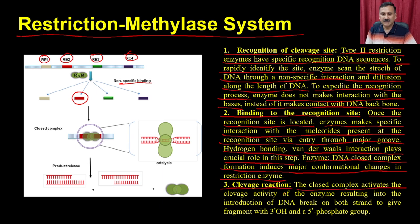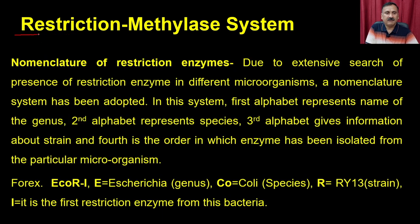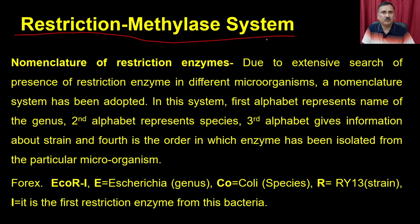The closed complex activates the cleavage activity of the enzyme, resulting in the introduction of DNA breaks on both strands to give fragments with 3-prime hydroxyl and 5-prime phosphate groups. Since so many restriction enzymes of type 1 and type 2 have been isolated, a nomenclature system is needed.